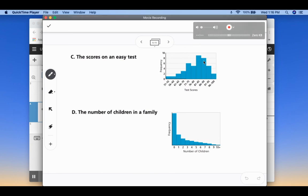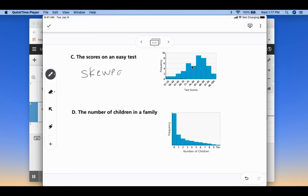Our next one, the scores on an easy test. So if you think about an easy test, that's not going to be normally distributed. It's going to have more people getting high scores and fewer people getting low scores. So this would be skewed left.